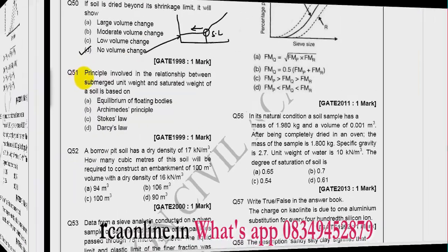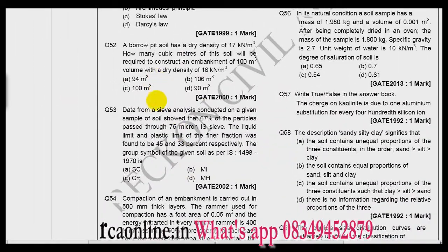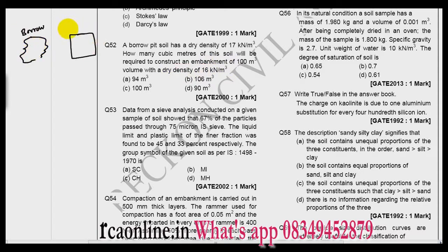Question number 51: Principle involved in the relationship between submerged unit weight and saturated weight of a soil is based on. So what is our relation? Gamma submerged is equal to gamma saturated minus gamma w. This comes from the buoyancy principle, and who gave the buoyancy principle? Archimedes. Okay, so the answer is B. Now see question number 52: A borrow pit soil has a dry density of 17. How many cubic meters of this soil will be required to construct an embankment of 100 meter cube volume with a dry density of 16?